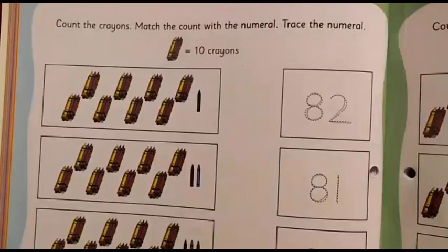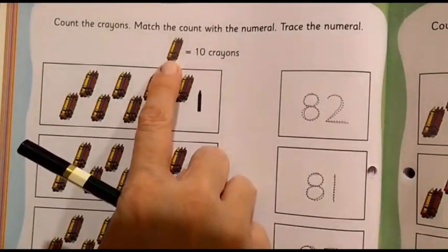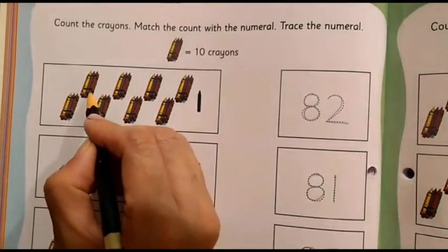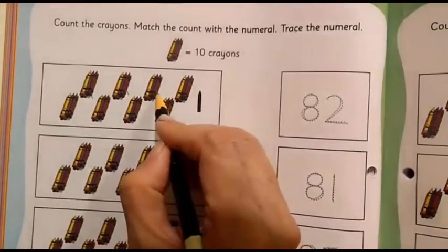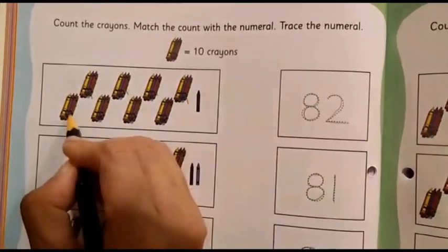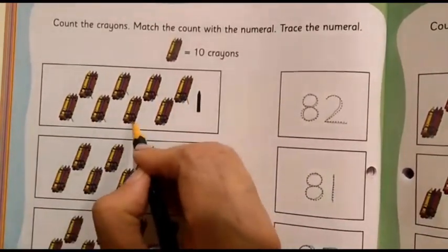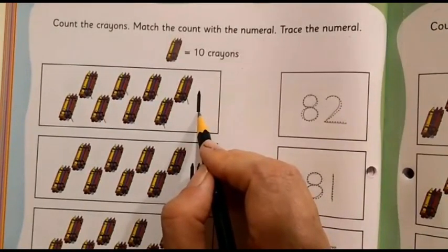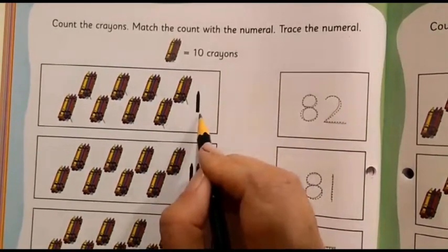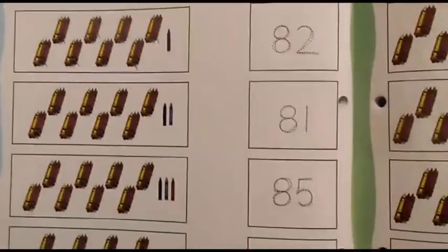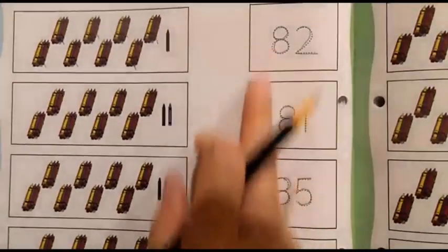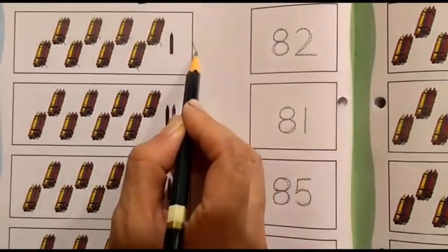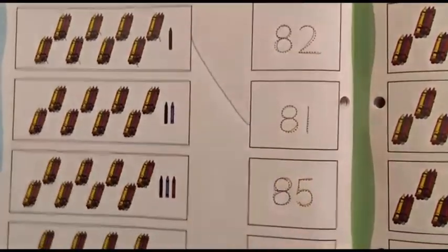Let's start counting. As I have already told you, one bundle means 10 crayons. So, let's start counting. It's 10, 20, 30, 40, 50, 60, 70, 80. And then, we have individual. Only one crayon. Then, 80, 81. So, where is number 81? Where can you see it here? Here. So, we are going to match 81 crayons to number 81.